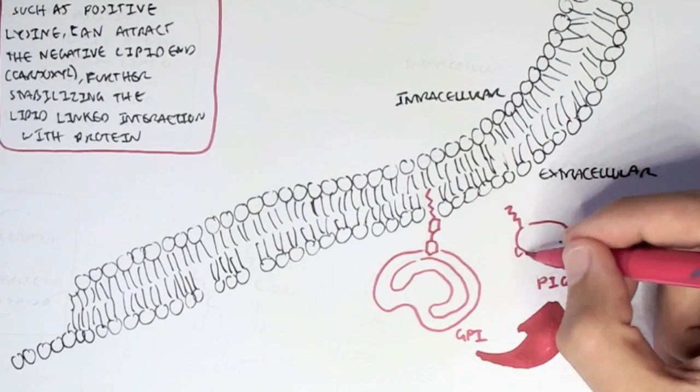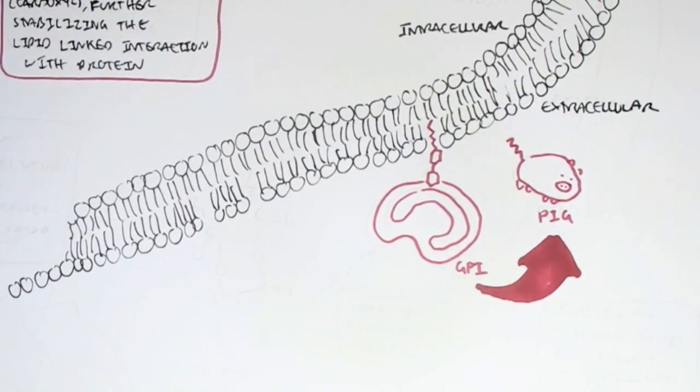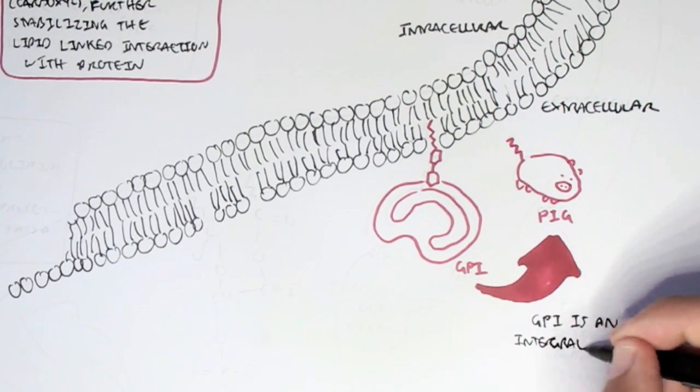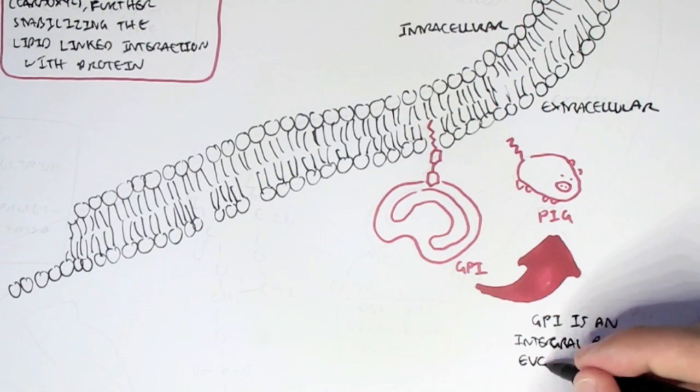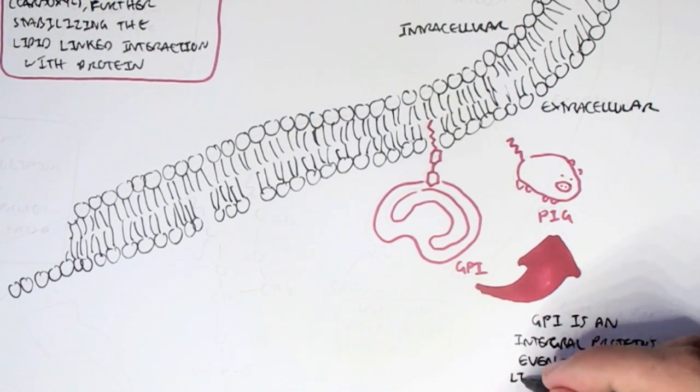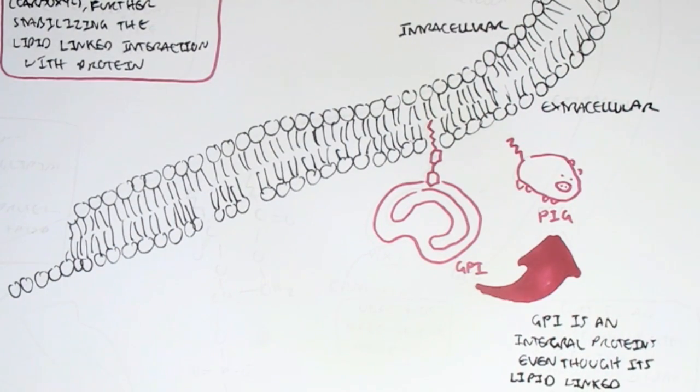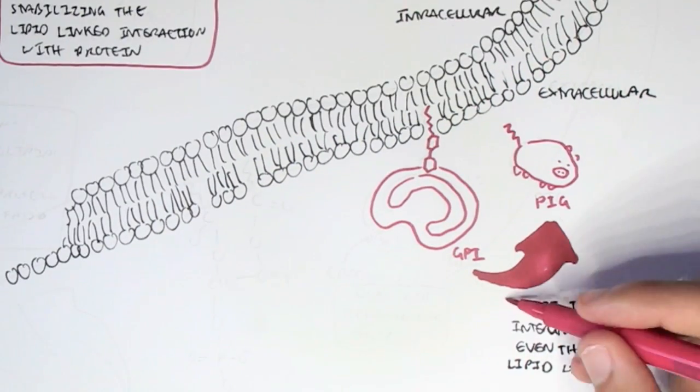And glycosylphosphatidylinositol is actually classified as an integral protein even though it is lipid-linked. So it's an integral protein. And so that's why we see sometimes that there are integral proteins which are lipid-linked. And this is a good example. And why is it lipid-linked? Well, let's have a flashback to the beginning of this video.